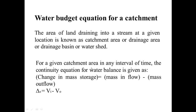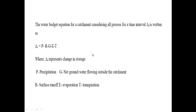For a given catchment area, for a given time interval, the continuity equation for water balance is written as: change in mass storage equals mass inflow minus outflow. The change in mass storage equals whatever mass inflow is occurring, minus the mass outflow. Change in mass storage is denoted by delta S, mass inflow by Vi, and mass outflow by V-naught. The water budget equation considering all processes for a given time interval delta t, for any catchment area, is written as: delta S equals P minus R minus G minus E minus T.